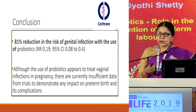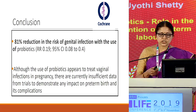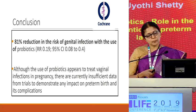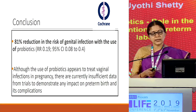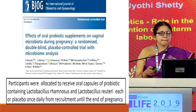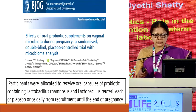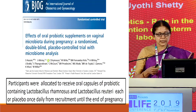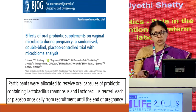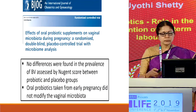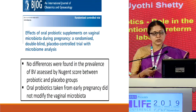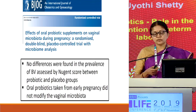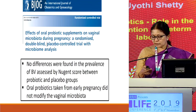The Cochrane review found an 81% reduction in the risk of genital infection, so women will not return with repeated infection episodes. However, they were not able to demonstrate prevention of preterm birth and did not conclude that probiotics are useful in preventing preterm birth. A 2019 article on probiotic supplements used oral capsules containing Lactobacillus rhamnosus and reuteri, administered from when the patient reported to hospital until the end of pregnancy. That study assessed bacterial vaginosis using Nugent score and found that oral probiotics were not useful in modifying the vaginal microbiome.